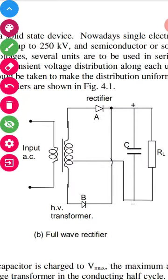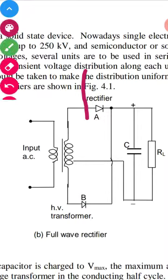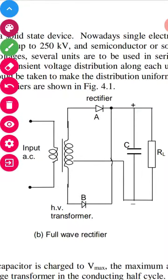For inductive loads, filtering circuits like RC filters and RL filters are used. In power electronics, DC generation is widely used. These are the basics of full-wave and half-wave rectifier circuits.